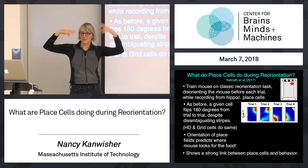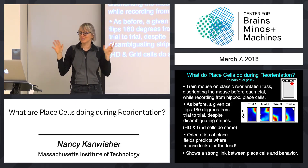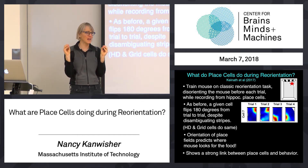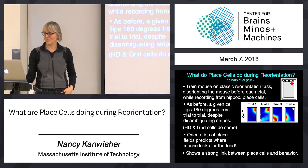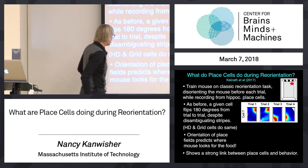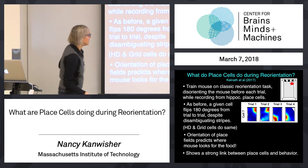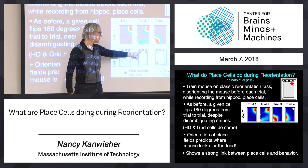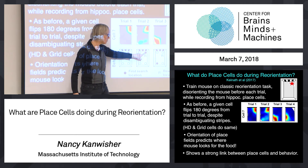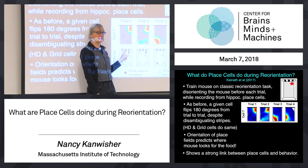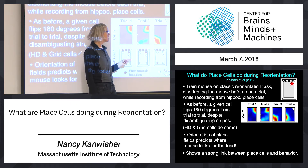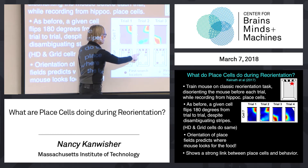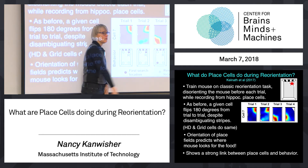In another paper, they've done very similar experiments looking at head direction cells and grid cells, and they all behave the same way — they don't have quite the same tight link to behavior, but they also behave the same way. So on some trials the rodent first looked in that corner, and sometimes they look in the other corner — 50-50, they're not using the feature information to break the symmetry, they're just using the shape of space. And on the corresponding trials, when behavior flips from one corner to the other corner, so do the place fields.